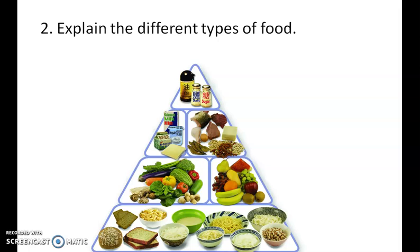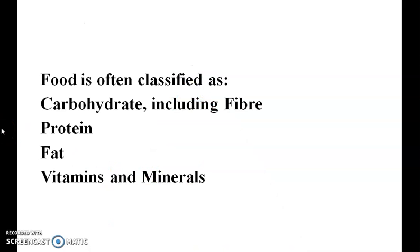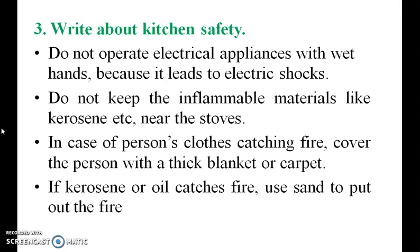Explain the different types of food. The picture shows the different types of food. Food is often classified as carbohydrate including fiber, protein, fat, vitamins, and minerals.